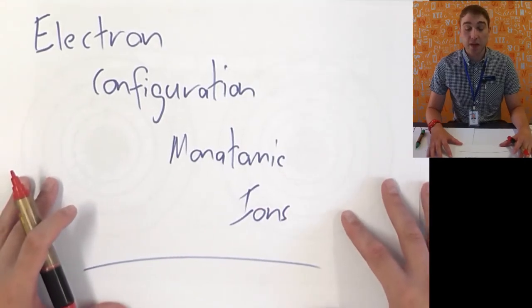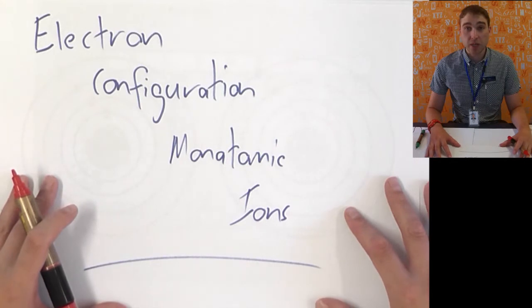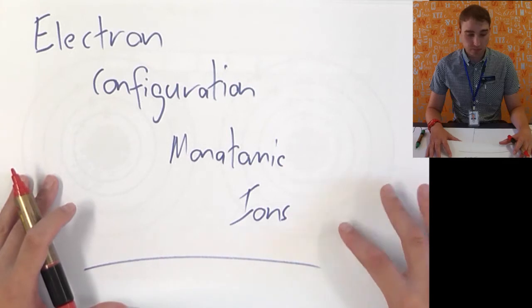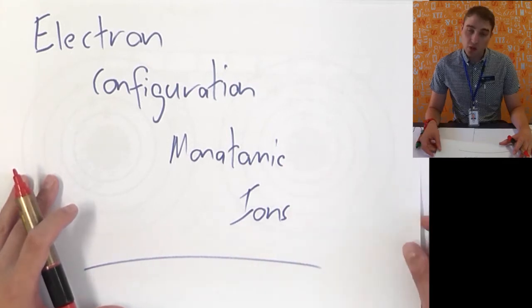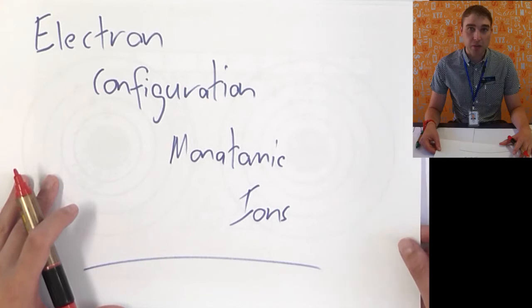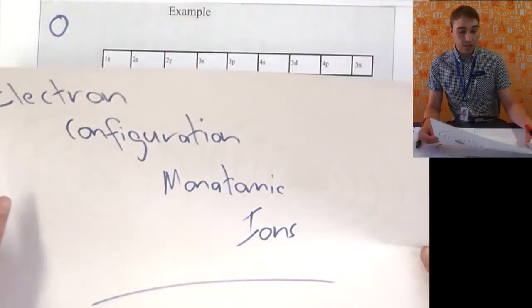Today on Flipping Science we're going to look at how to figure out the electron configuration of monatomic ions up to number 38 on the periodic table. We're just going to go through some examples and have a look at what the general rules are to figure out what the charges are going to be.